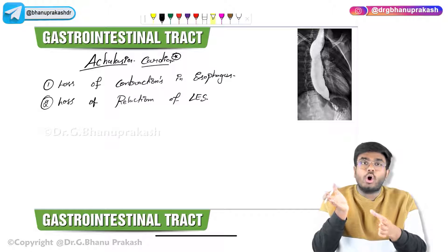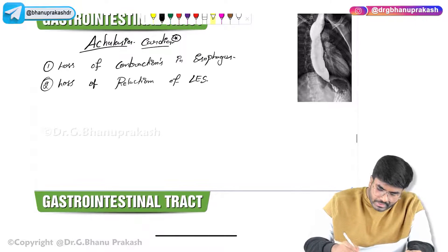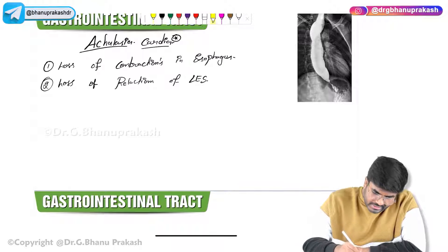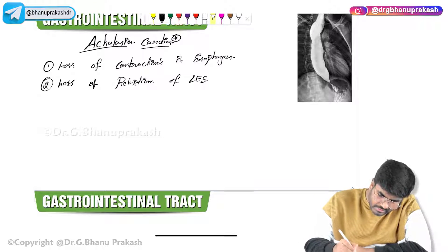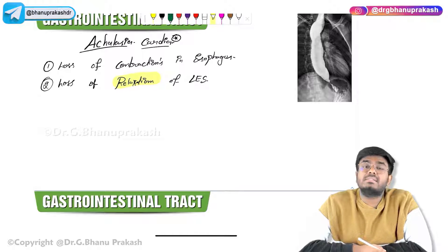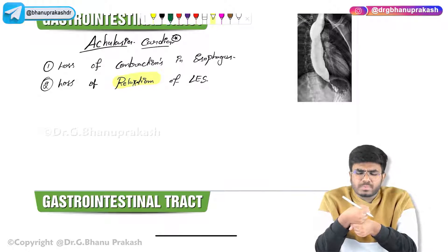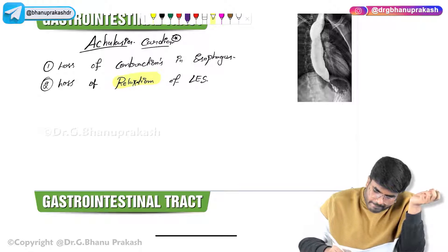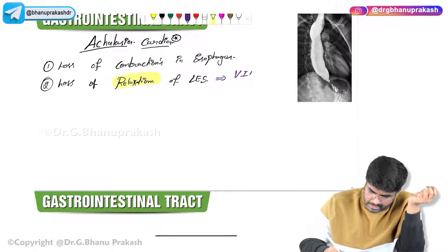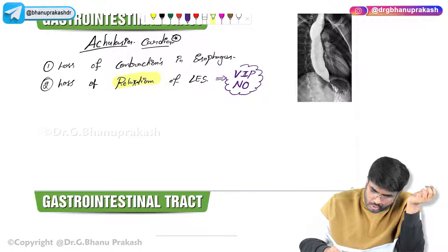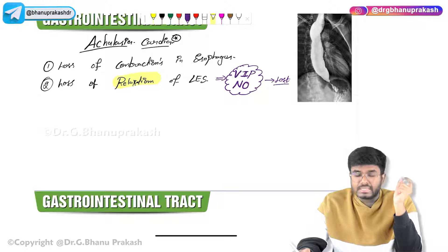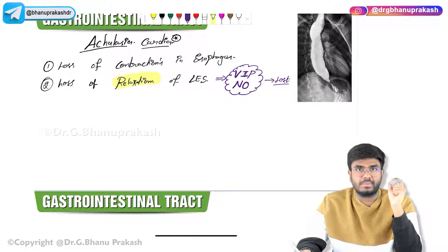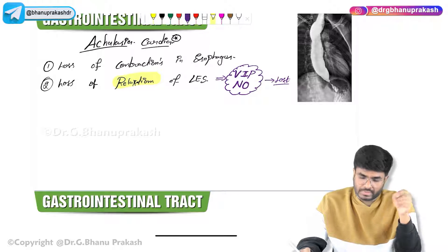Achalasia means no movements, no contractions in the esophagus. The important point is: why is there loss of relaxation? Normally in the lower esophageal sphincter, there are certain relaxing or inhibitory neurotransmitters which inhibit contraction and promote relaxation. These are called VIP (vasoactive intestinal peptide) and nitric oxide. In Achalasia Cardia, these neurotransmitters are gone — they are lost. Due to the loss of these inhibitory neurotransmitters, there is failure of relaxation of the lower esophageal sphincter. That's the main problem.